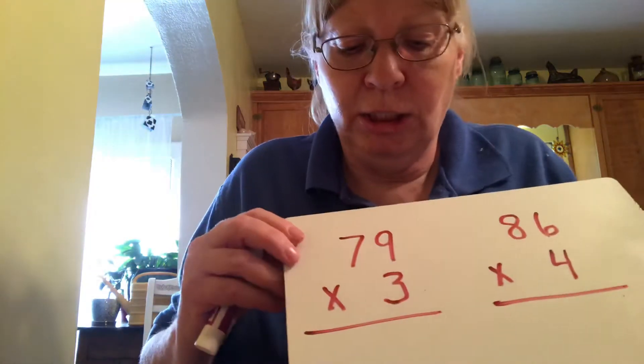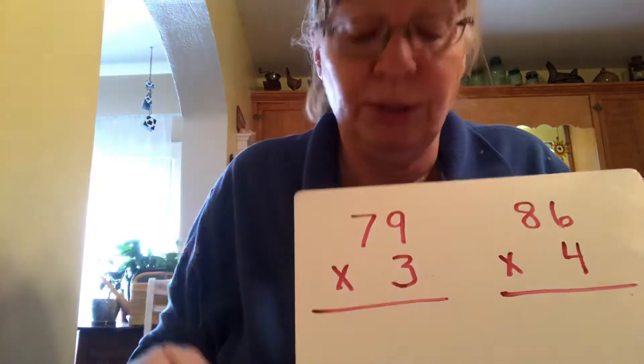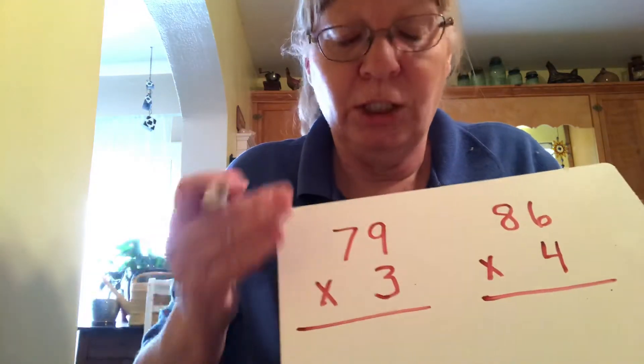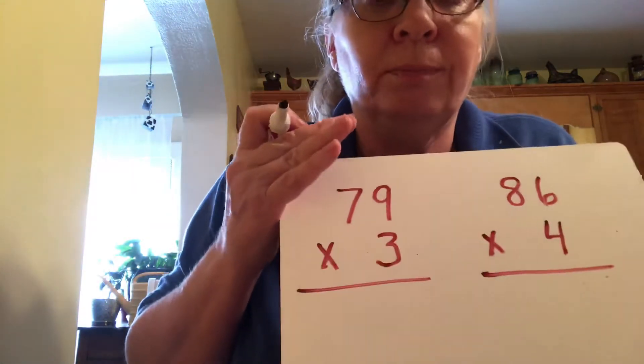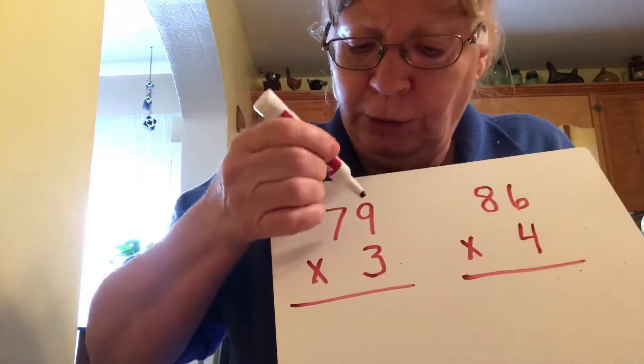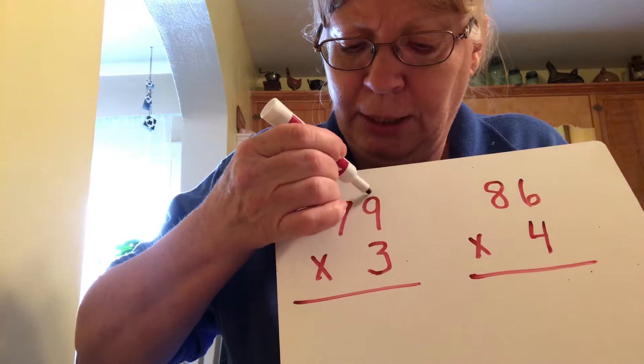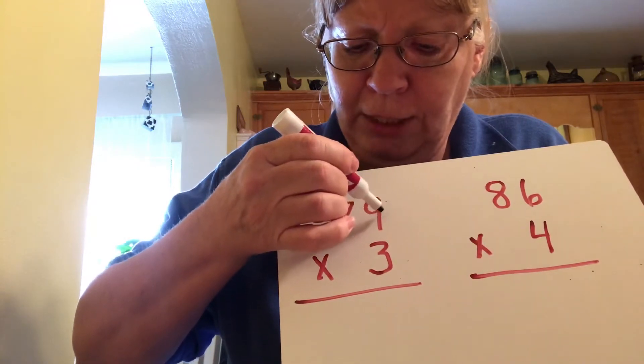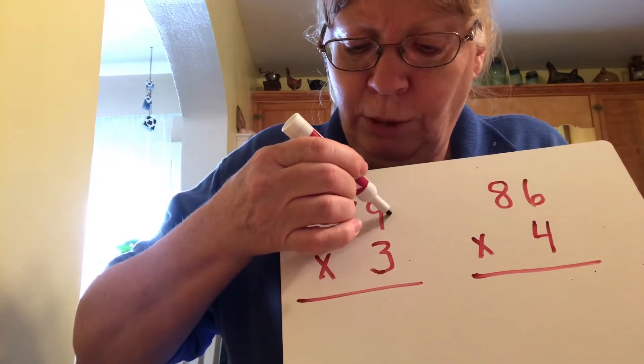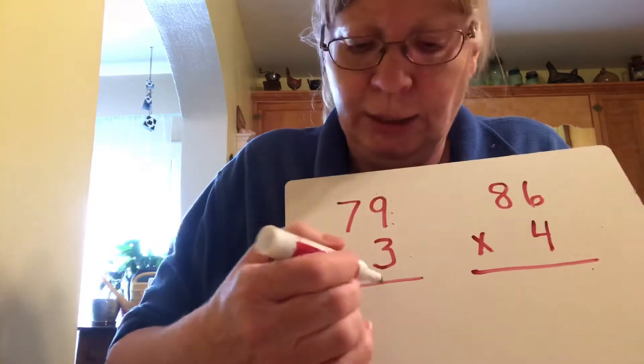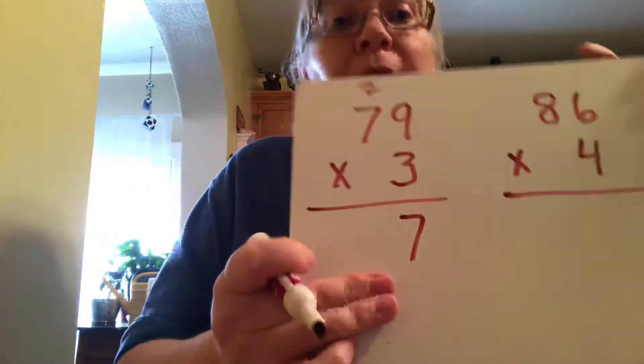The first problem is 79 times 3. We're going to go 3 times 9, which is going to be 3, 6, 9, 12, 15, 18, 21, 24, 27. So we write 7 down here and carry the 2.